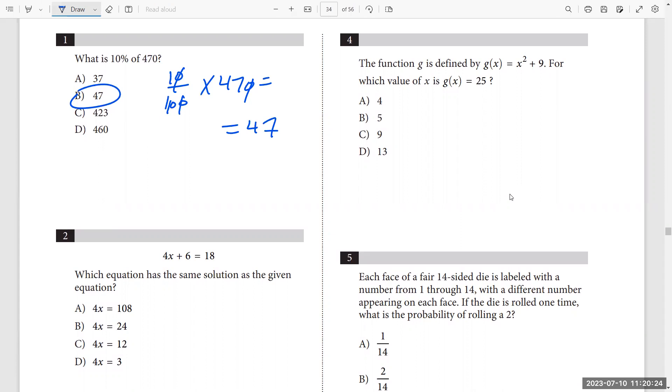Question number four. The function g is defined by g of x equals x squared plus 9. For which value of x, g of x is equal to 25? This is g of x. I want to equate it with 25 and solve it. So x squared, by subtracting 9 from each side, x squared is 16. So x equals positive or negative 4. I have 4, you can take it.